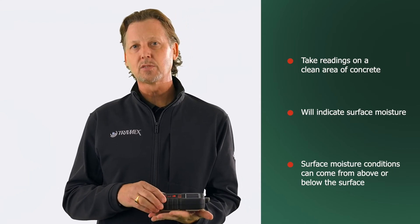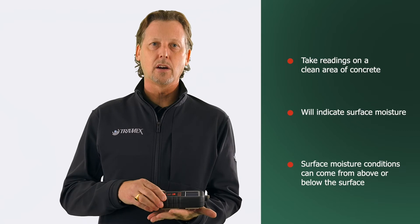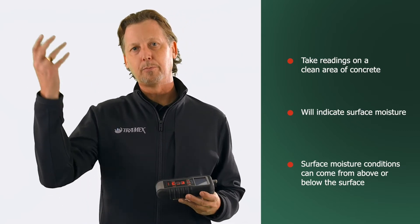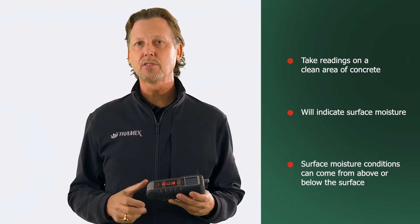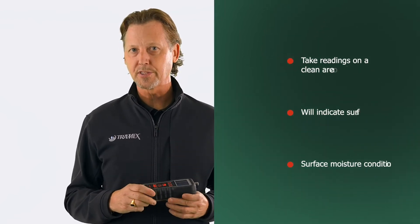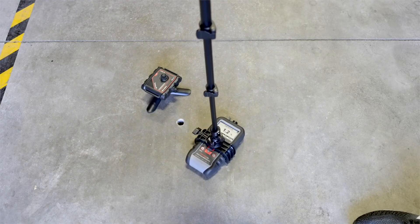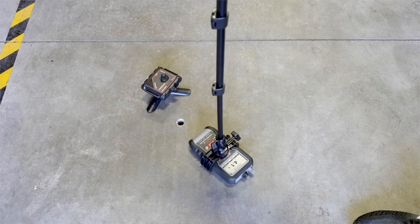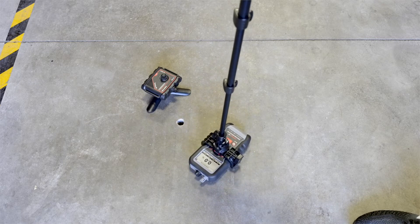Keeping in mind that this will give an indication of surface moisture, which can be caused by ambient conditions or could be coming from below the slab. We're going to take readings at each location around the clock — 12 o'clock, 3 o'clock, 6 o'clock, 9 o'clock — and we're going to keep the highest reading.